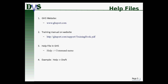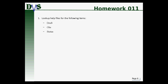Where do you go to find information about GHS? The first place is the GHS website, www.ghsport.com. On that website you can also find a training manual that's very helpful. And of course there is always the help file in GHS itself — you can type the command 'help' followed by a space and then the command name. For example, 'help draft'. You can also see the help menu in GHS itself. For your first homework, open up GHS and look up the help for three commands: Draft, GHS, and Status. You will need a working copy of GHS for this.